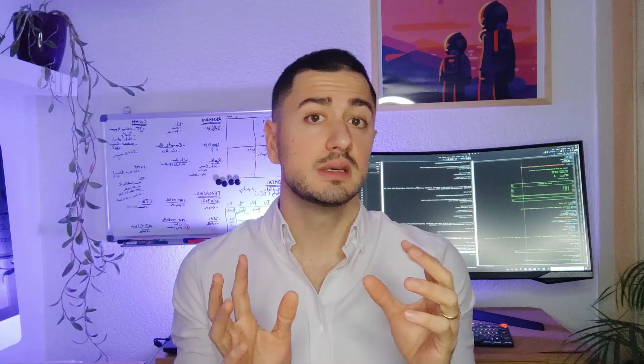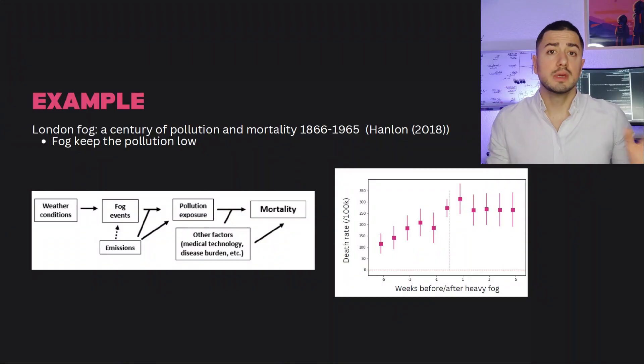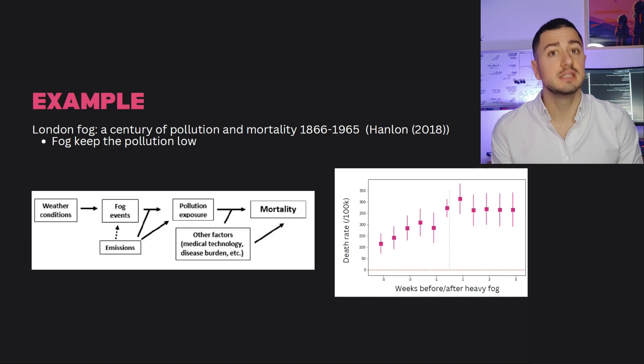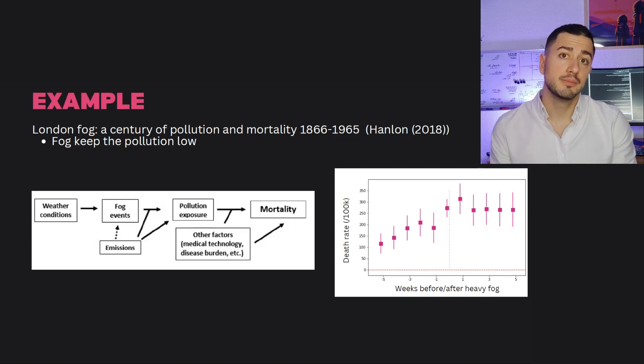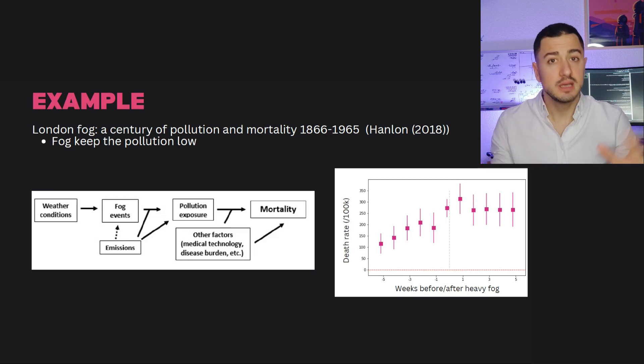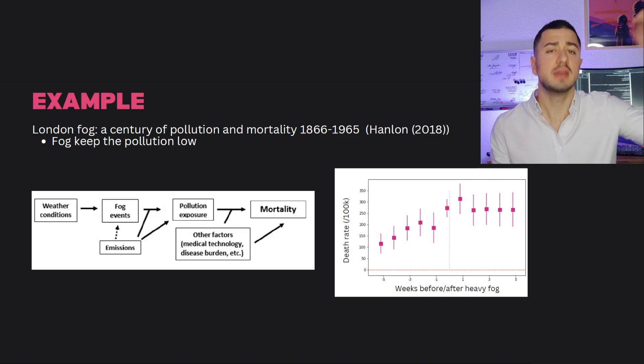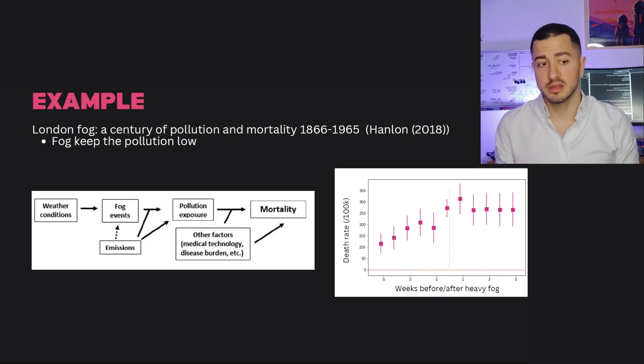The idea of the paper is to use fog, because when the weather is foggy, it keeps pollution low and really directly increases pollution exposure and directly affects the health of citizens. So here, we can look at what we call an event study. We just look at the graph on the right at the variation of death rate over time, before and after the vertical line, which marks weeks with heavy fog. And we see that the number of deaths is increasing.